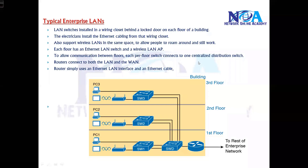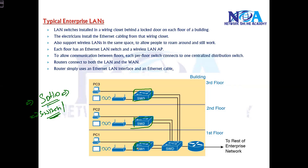Now the next thing we'll try to understand is enterprise LANs. In the previous section we discussed small office home office LANs. In enterprise LAN, the devices used will be the same, but you have a dedicated switch — we don't use an integrated device. We have dedicated switches to provide LAN connection, and you may have three to four switches or more, depending upon the size of the network, because here we are connecting hundreds of devices.